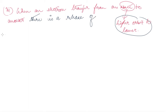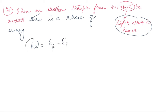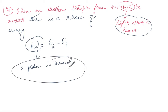The energy released is equal to h·ν, which equals E_final minus E_initial. This energy is released in the form of a photon. So the energy release can be described as the emission of a photon.